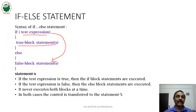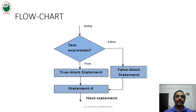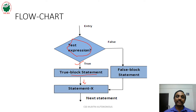In both cases, after executing the corresponding block statements, control is transferred to statement x. In the flowchart for if-else statement, the test expression is verified first. If true, the true block statements are executed, then control goes to statement x. If the test expression is false, then else block statements are executed, then control goes to statement x. So after executing either true block or false block statements, control goes to statement x.